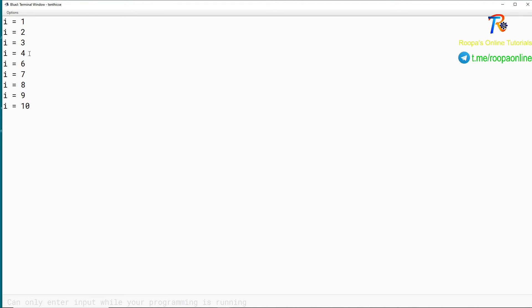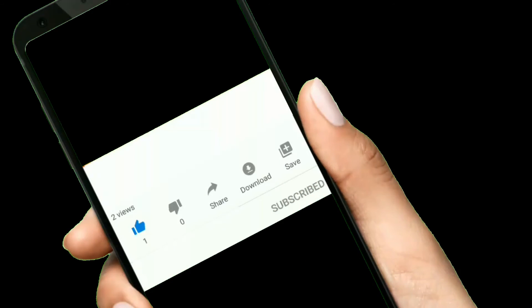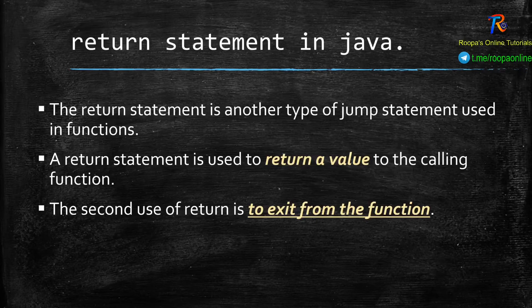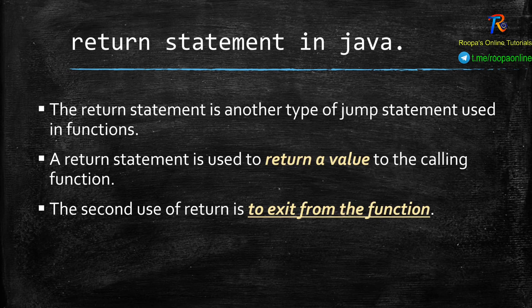Now we will look at the return statement in Java. The return statement is another type of jump statement which is mainly used in functions. This is a commonly asked question in board exams. The return keyword has two uses: first, to return a value to the calling function; second, to exit from the function completely. I will explain functions in detail in my coming video series.